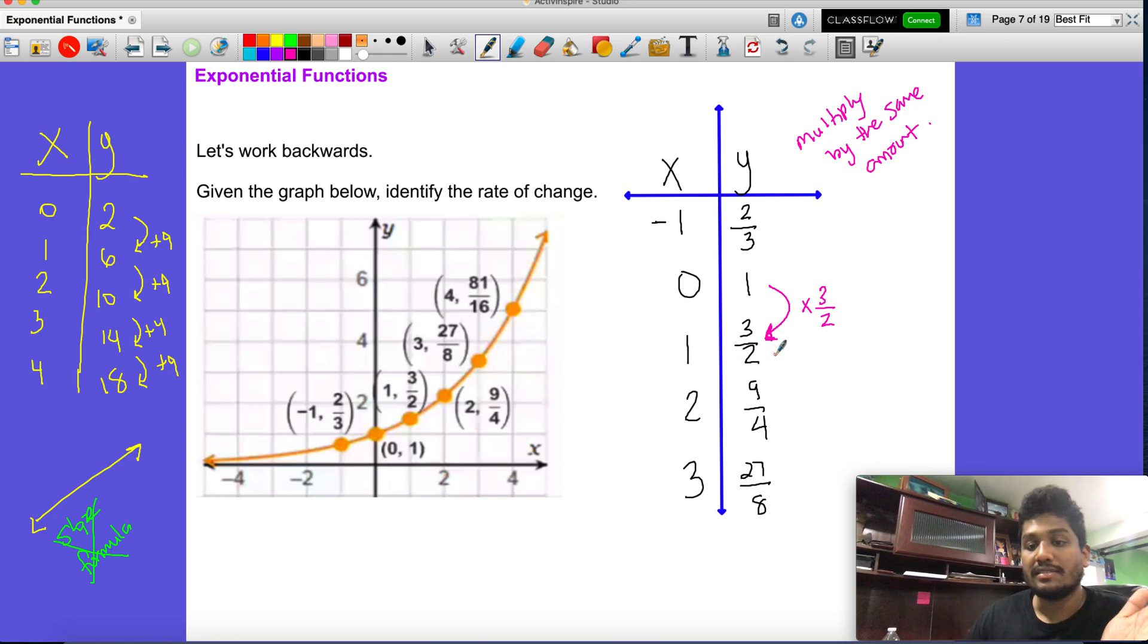Now the real way to check that is let's say that we're going from this point down to the next point. Is it true that if I took 3/2 and I multiplied by 3/2 it would give me 9/4? So that's what we're going to check on the bottom. 3/2, times 3/2. When you're multiplying fractions you just go right across. 9/4, so it seems to work.